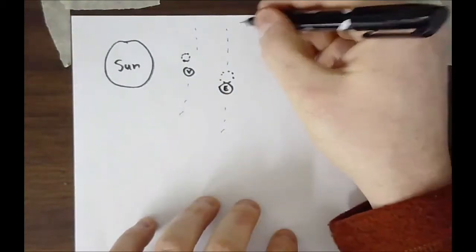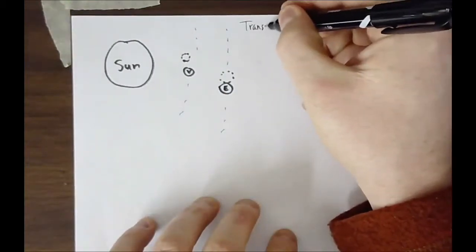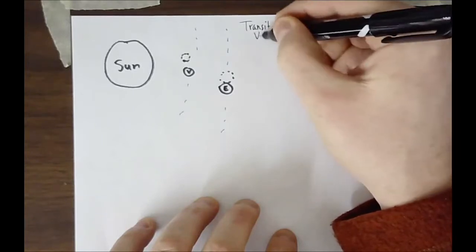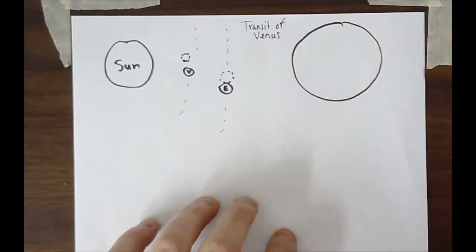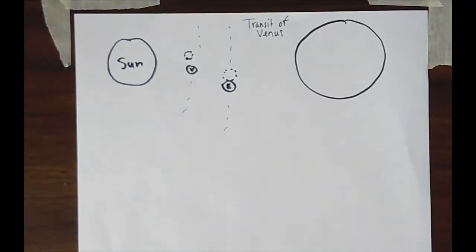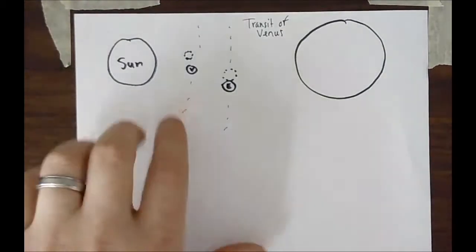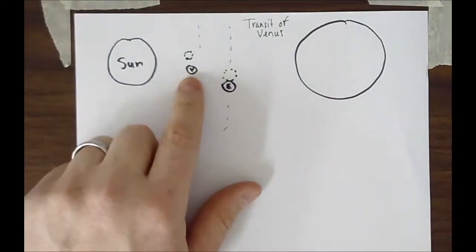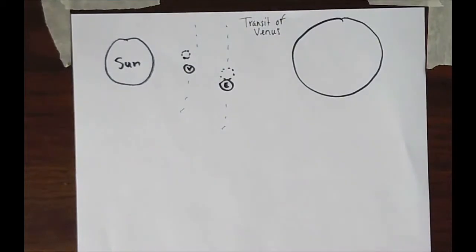So this is the transit of Venus. Now the transit of Venus is just like a solar eclipse except instead of the moon blocking out the Sun, you now have a planet, aka Venus, and it will actually look just like a dot crossing the sky.